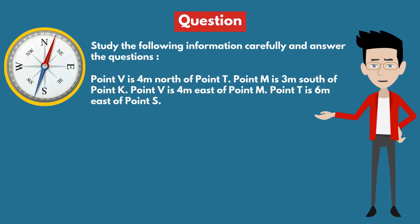Point V is 4 meters north of point T. Point M is 3 meters south of point K. Point V is 4 meters east of point M. Point T is 6 meters east of point S.